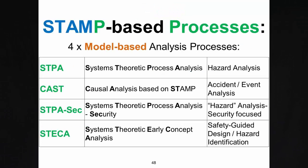Currently there are four model-based analysis processes. First, STPA — Systems Theoretic Process Analysis — which is a hazard analysis. Second, CAST — Causal Analysis based on STAMP — which is an accident and event analysis. Third, STPA-sec, a cybersecurity-focused version of STPA. And fourth, STECA — Systems Theoretic Early Concept Analysis — which is a safety-guided design and hazard identification method.